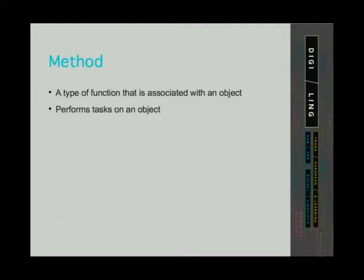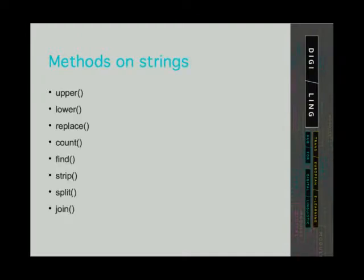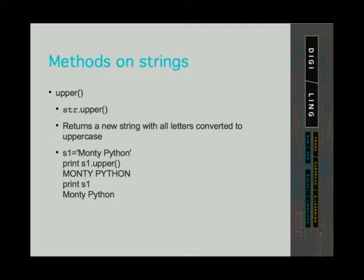Let's take a look at some methods we can call on strings. We have already said that a method is a type of function that is associated with an object. A method performs tasks on objects. We will mention 8 methods that can be called on strings. We will also see norms used to describe methods in Python documentation. The first method we'll mention is the upper method. This method returns a new string with all letters converted to uppercase. The syntax for the method is the following.